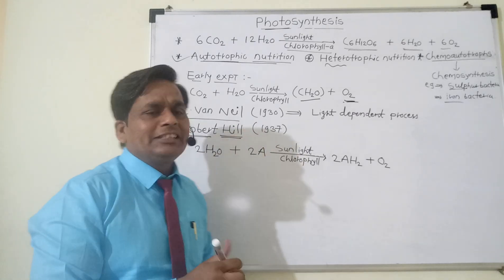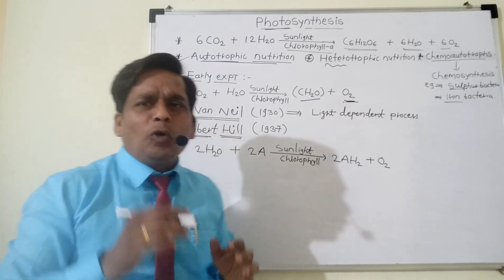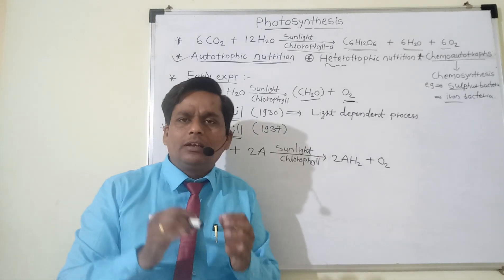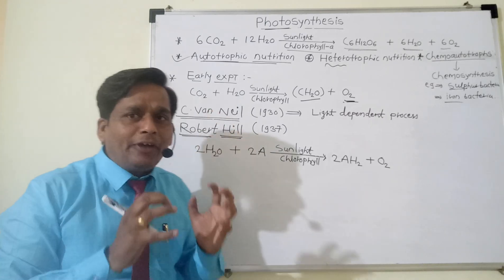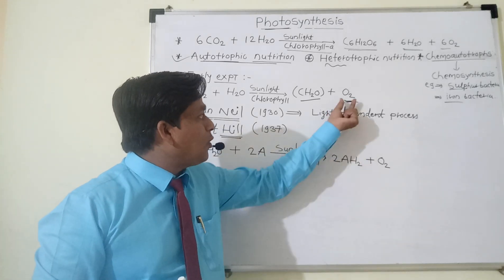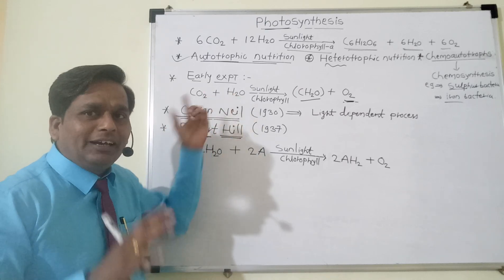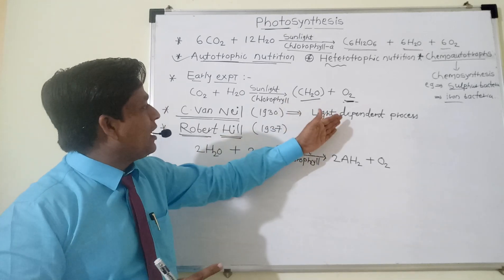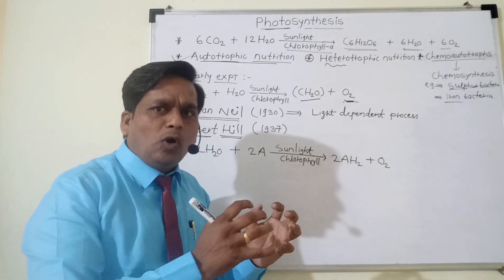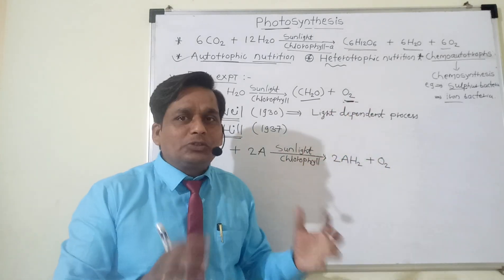The next scientist came in 1930 — C. Van Niel. He suggested that photosynthesis is a light-dependent process, meaning light is a very essential factor for photosynthesis. He demonstrated that during photosynthesis, whatever oxygen is evolved, that O2 comes from water molecules, not from CO2 — exactly opposite to the earlier experiment. According to C. Van Niel, oxygen comes from H2O — meaning water molecules are split in a process called photolysis.